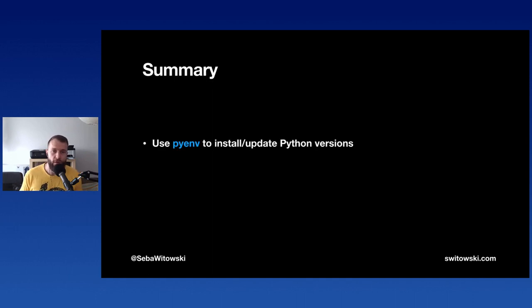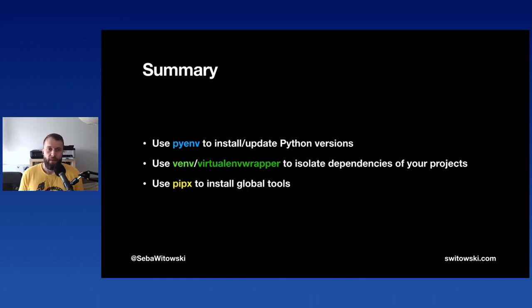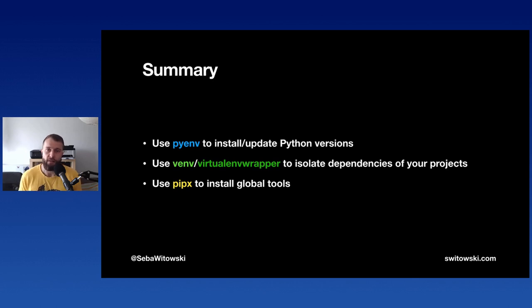That brings us to the end of the presentation. To summarize: use pyenv to install and switch between Python versions; use virtual environments when working on different projects to isolate dependencies — always create a separate virtual environment per project. Python's built-in venv module works fine, but virtualenvwrapper offers additional convenience. Finally, for globally-used tools, use pipx instead of plain pip to avoid version conflicts — each package gets its own isolated environment, but you use them just like global installs.